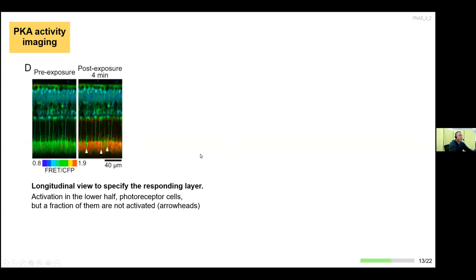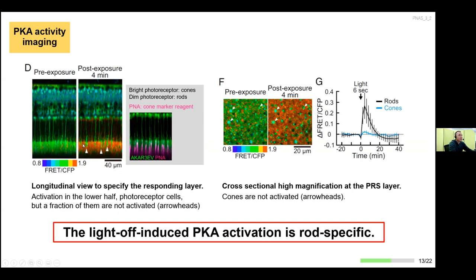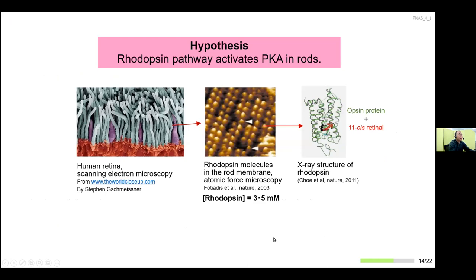I then characterized this potentially interesting light-off-induced PKA activation. First, I checked light dependency using through-the-lens stimulation and observed the area surrounding the light spot — data clearly showing that activation is confined to the stimulation spot, confirming it is a light-dependent reaction. Second, I identified the cell type affected. From the XZ reconstructed view before and after light stimulation, only the bottom half of the retina is affected — and based on previous PNA staining data it seems to be rod photoreceptors, confirmed by high-resolution XY images from the photoreceptor segment layer showing that cones are not activated, only rods.